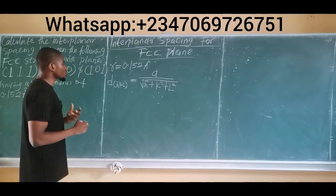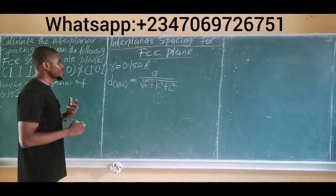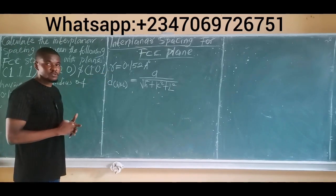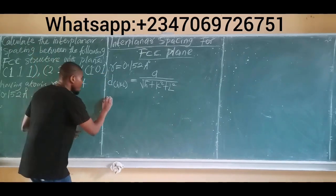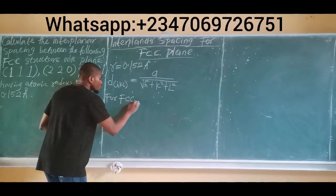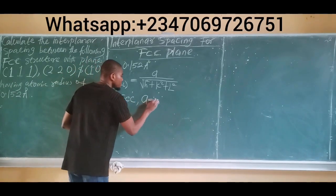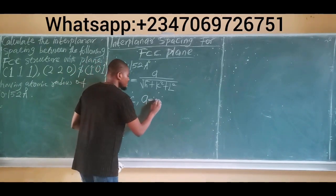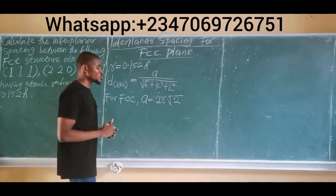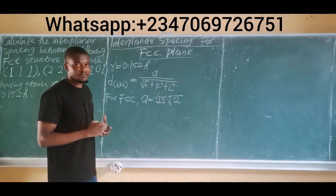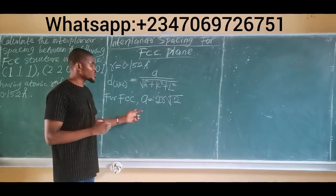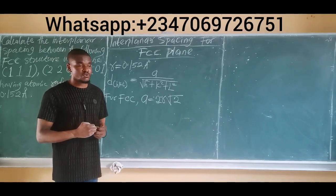What then is the relationship between the lattice constant and the atomic radius for the face-centered cubic structure? For FCC, the lattice constant A is always taken as 2r multiplied by the square root of 2. Always keep this in mind: for the face-centered cubic structure, A is always equal to 2r√2.